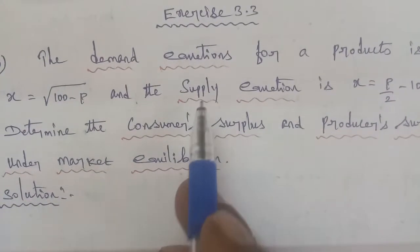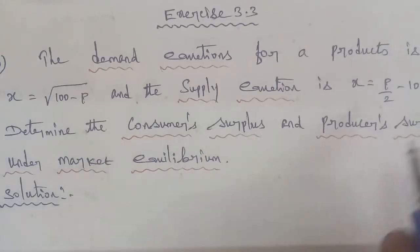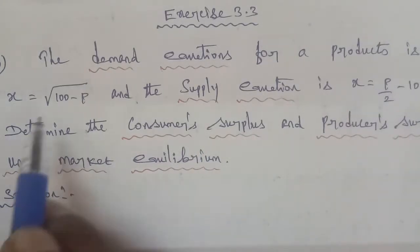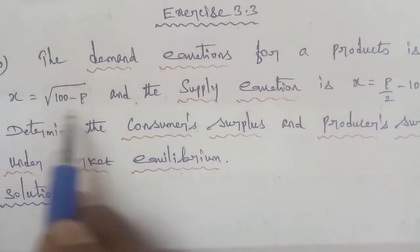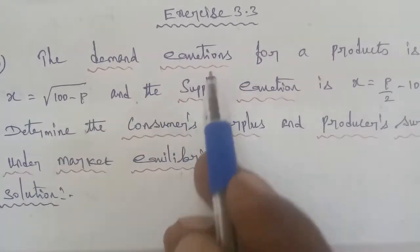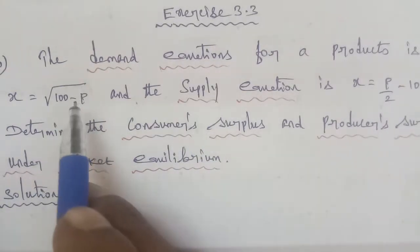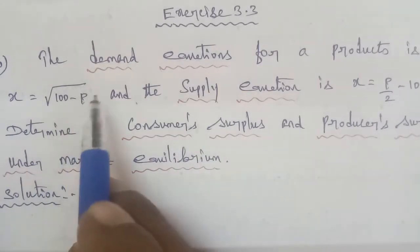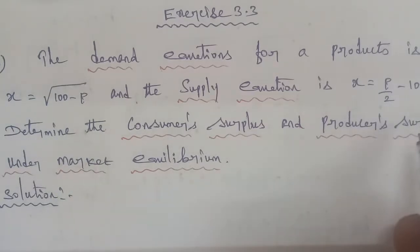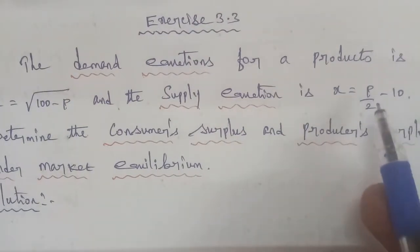In this problem, we need to find the consumer surplus and the producer surplus. The consumer surplus amount CS is equal to a value, and the producer surplus amount PS is equal to a value.